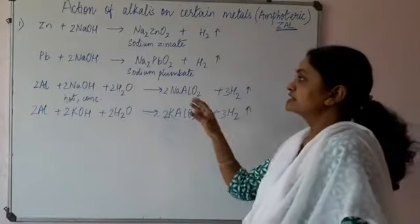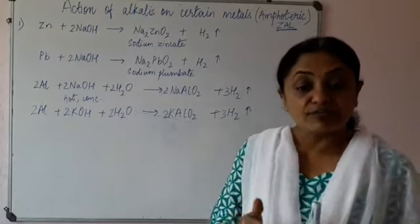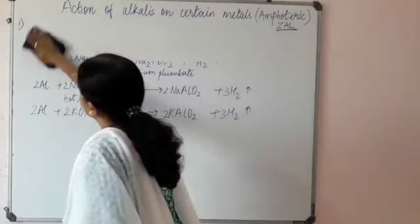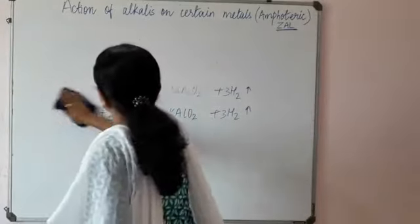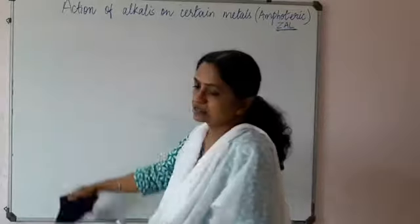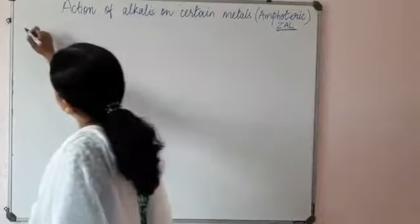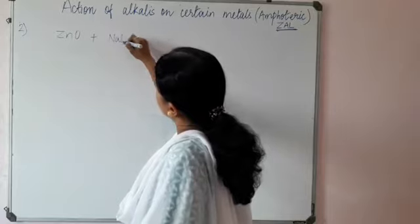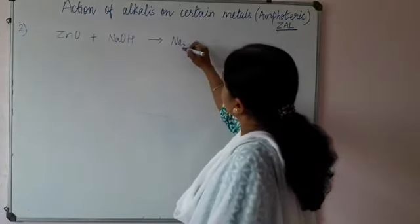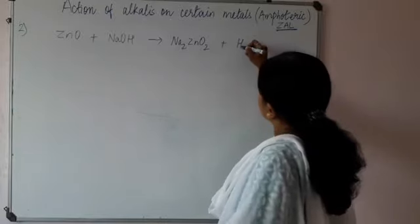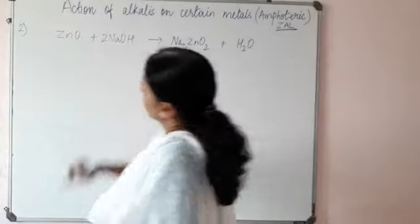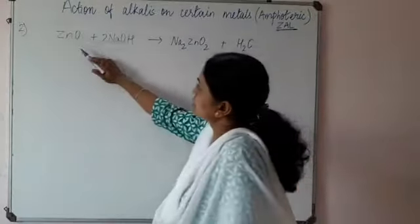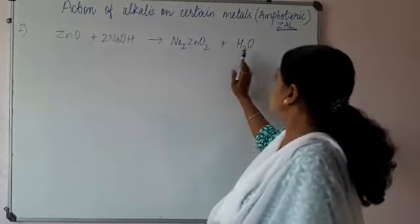Those are the 3 reactions with amphoteric metals reacting with alkali. Now we will see another 3 reactions with metal oxides. The salt formed will be the same every time. Here we take zinc oxide. When zinc oxide reacts with NaOH, we get sodium zincate (Na₂ZnO₂) plus water. The only difference is that instead of a metal, we have the oxide, so we get water instead of hydrogen.